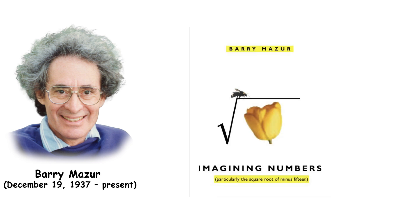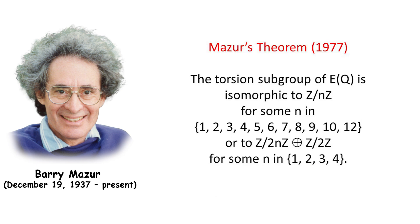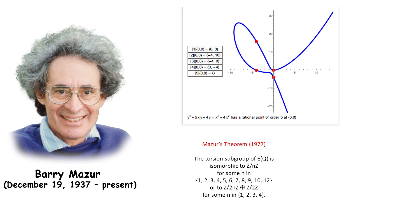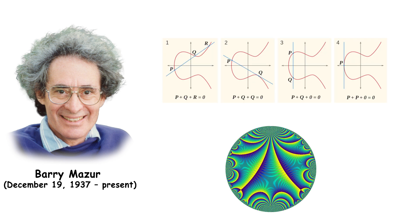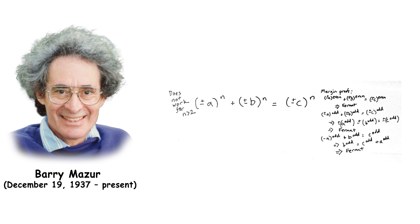Barry Mazur is an American mathematician who has made seminal contributions to number theory and algebraic geometry. He is known for Mazur's torsion theorem, which classifies the possible torsion subgroups of elliptic curves over the rational numbers. His work on the arithmetic of elliptic curves and modular forms has deep connections to the proof of Fermat's last theorem and has influenced many subsequent developments in number theory.